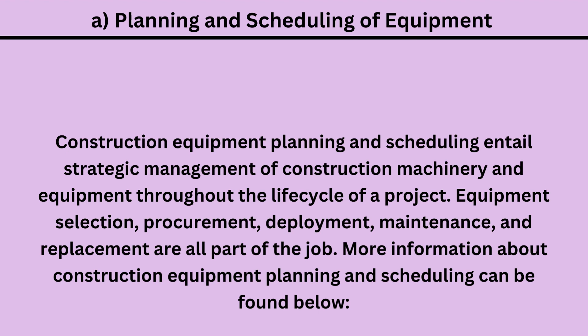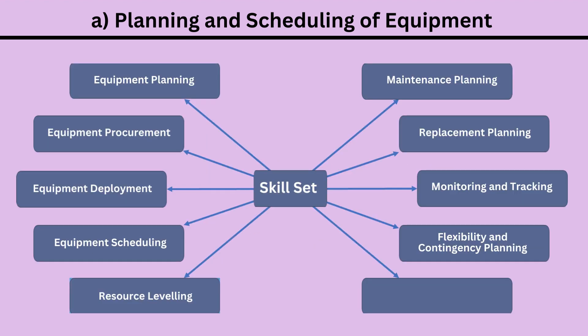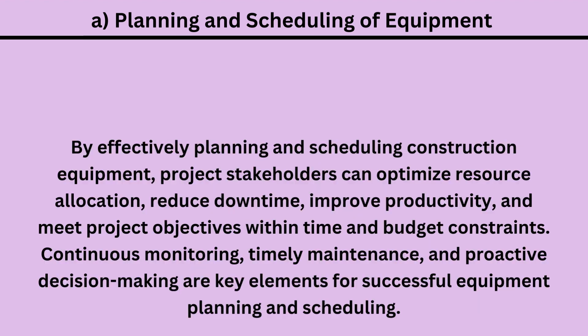More information about construction equipment planning and scheduling can be found below: 1. Equipment Planning, 2. Equipment Procurement, 3. Equipment Deployment, 4. Equipment Scheduling, 5. Resource Leveling, 6. Maintenance Planning, 7. Replacement Planning, 8. Monitoring and Tracking, 9. Flexibility and Contingency Planning. By effectively planning and scheduling construction equipment, project stakeholders can optimize resource allocation, reduce downtime, improve productivity, and meet project objectives within time and budget constraints. Continuous monitoring, timely maintenance, and proactive decision-making are key elements for successful equipment planning and scheduling.